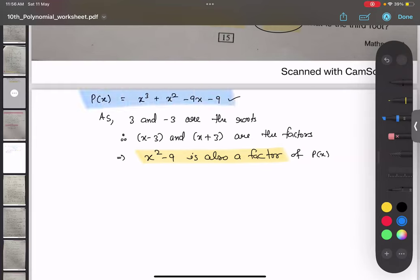So what I'm going to do is divide these two. I hope you remember how to divide. So x³ + x² - 9x - 9 divided by x² - 9.